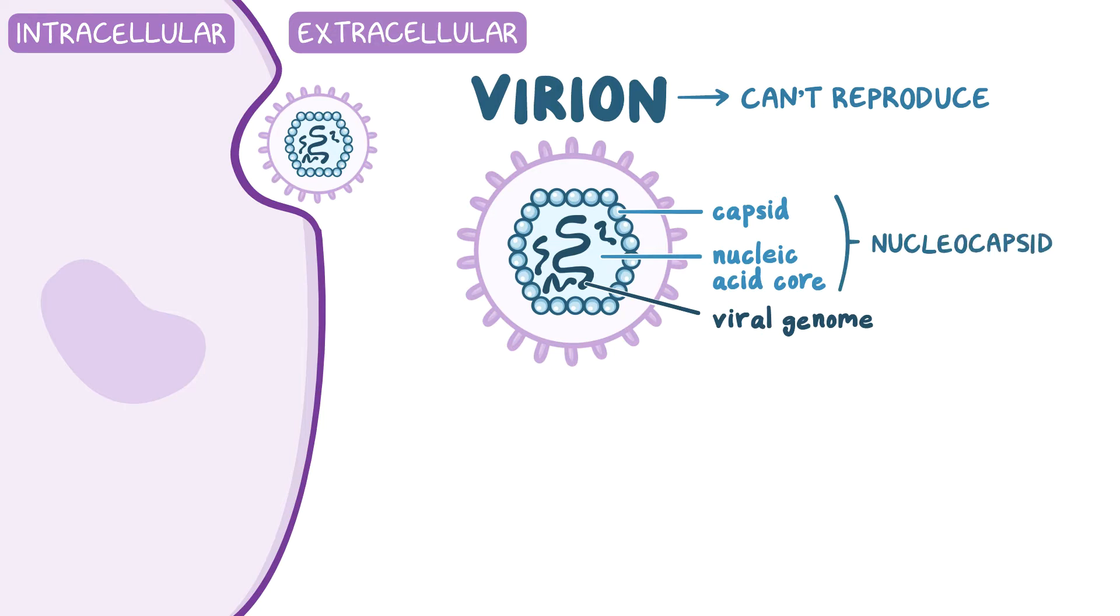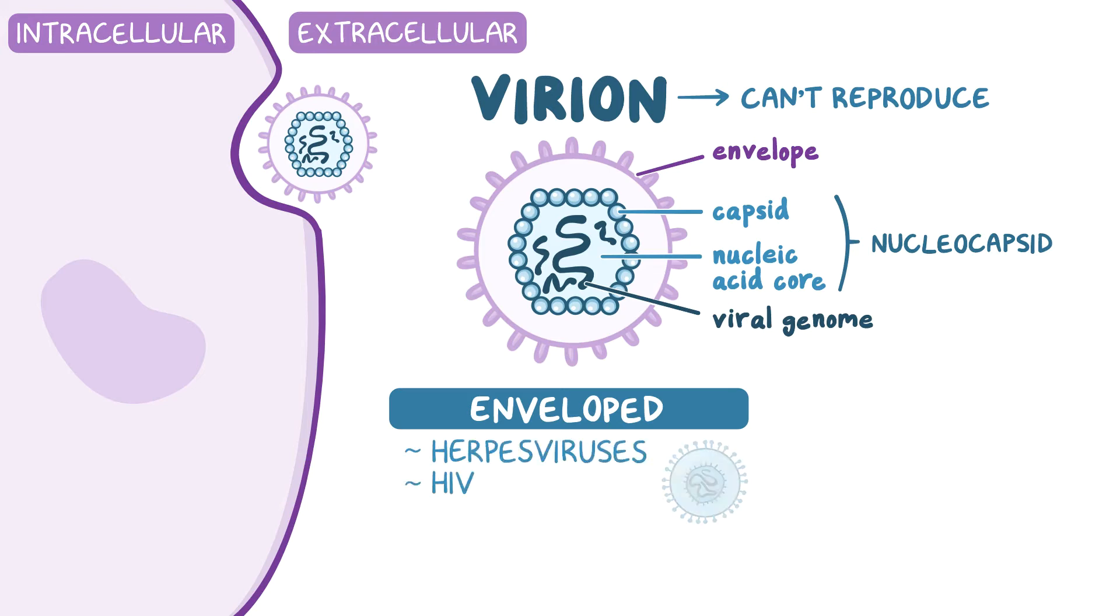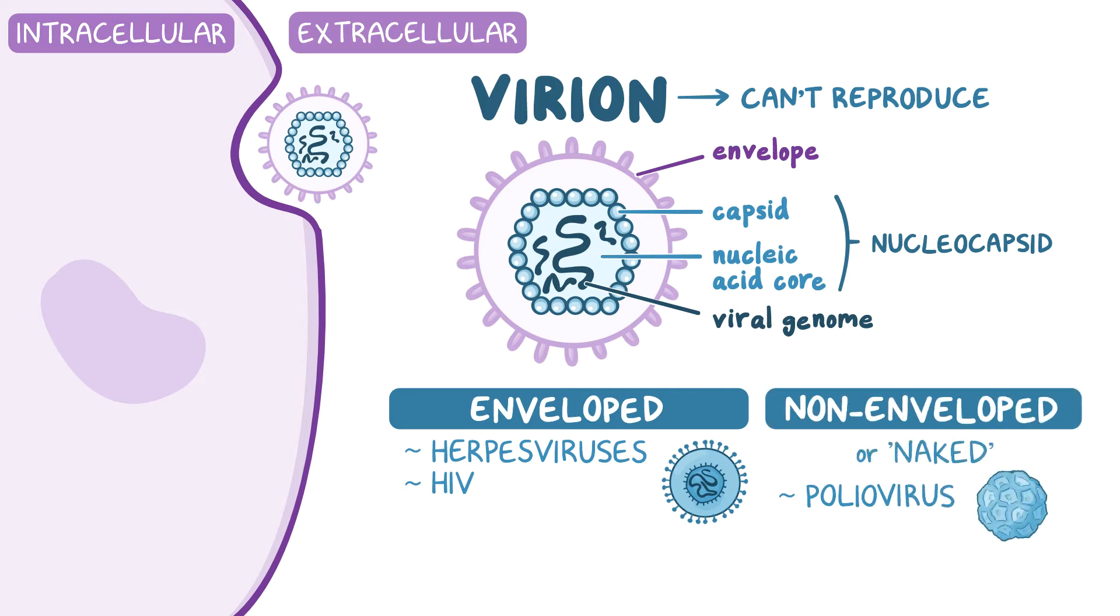Some virions have a phospholipid membrane derived from the host cell called an envelope, which surrounds the nucleocapsid. The viruses that have an envelope are called enveloped viruses, and these include the herpes viruses and HIV, while the ones that lack the envelope, such as poliovirus, are called non-enveloped or naked viruses.